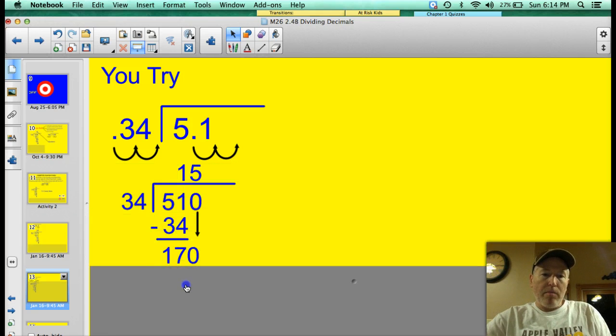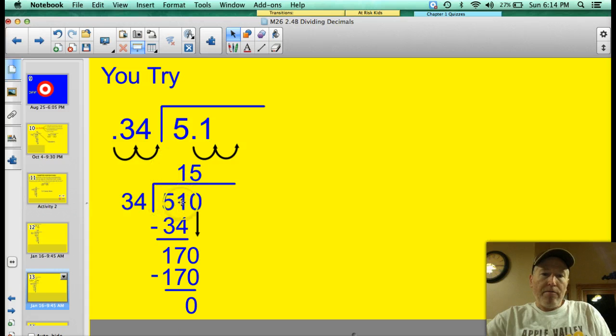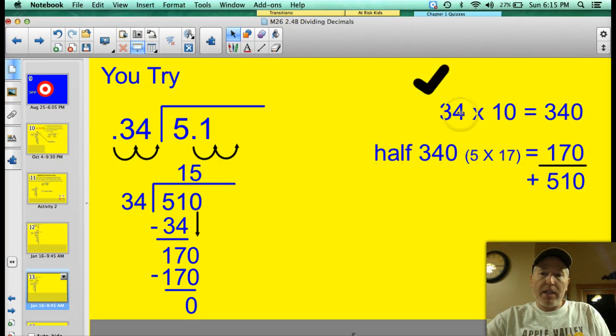Alright. Let's see. When you reset the problem then and move the decimals, you have 510 divided by 34. It goes into 51. 34 goes into 51 one time. If I subtract away, I have 17. Does 34 go into 17? No, it does not. Bring that 0 down. Does 34 go into 170? Yes, it does. It goes in there 5 times. So 5 times 34 is 170. My remainder is 0. So my quotient is 15. Let's just double check, see if that makes sense. Well, I know that 34 times 10 is 340. And half of 340 or 5 times 17 is 170. Adding those two together, yes, that's 510. That answer is correct.